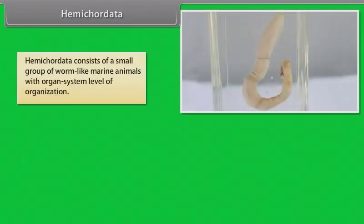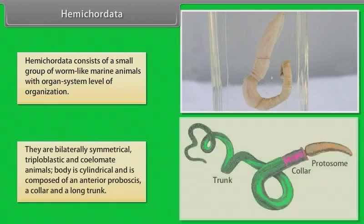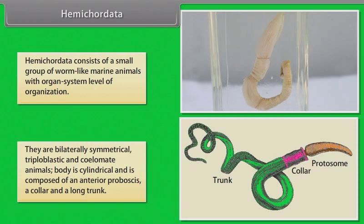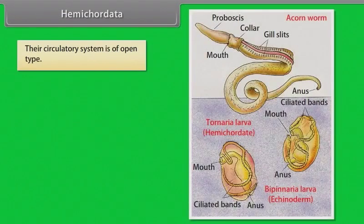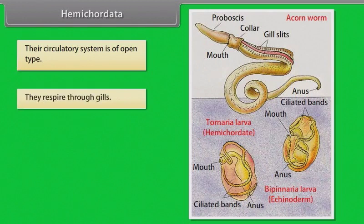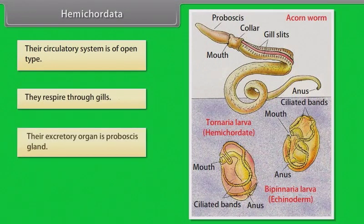Hemichordata consists of a small group of worm-like marine animals with organ system level of organization. They are bilaterally symmetrical, triploblastic and coelomate animals. Body is cylindrical and is composed of an anterior proboscis, a collar and a long trunk. Their circulatory system is of open type. They respire through gills.